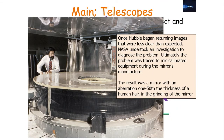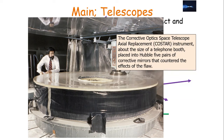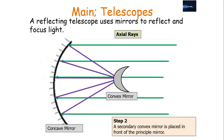Once the Hubble began returning images less clear than expected, NASA investigated and ultimately traced the problem to miscalibrated equipment during the mirror's manufacture. The result was a mirror with an aberration of 1/50th the thickness of a human hair in the grinding of the mirror. They launched the Corrective Optics Space Telescope Axial Replacement, or COSTAR, which is about the size of a telephone booth, and placed five pairs of corrective mirrors into Hubble to counteract the effects of the flaw.